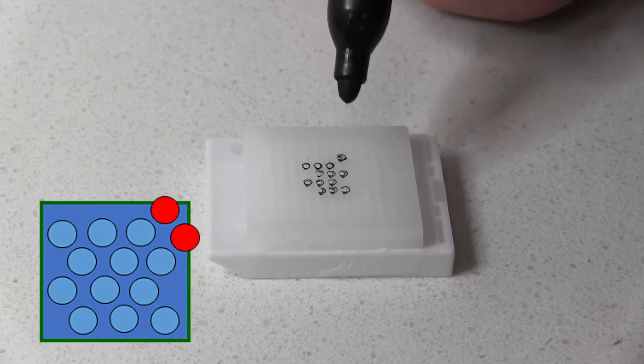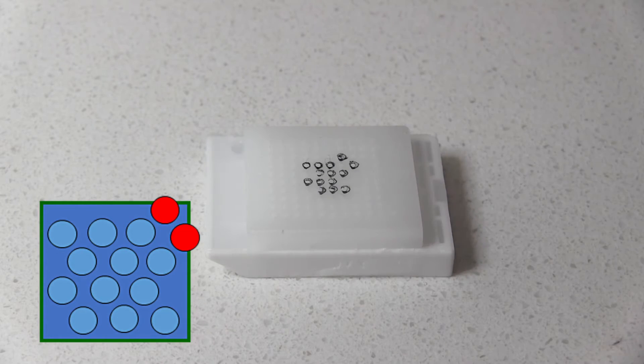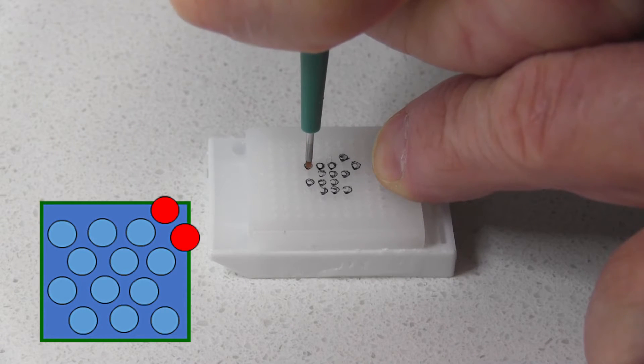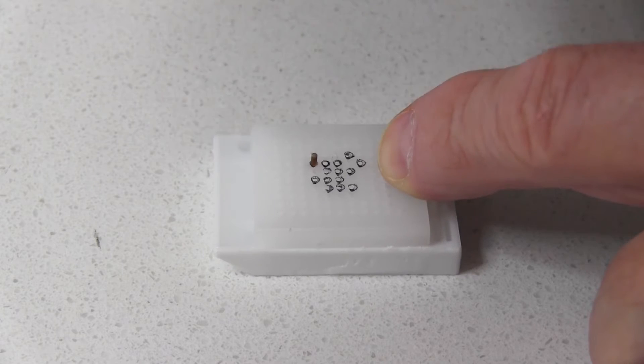Now we can begin to fill the TMA block. As you can see from the markings it makes it really easy to see the exact location you will be inserting the tissue cores in.